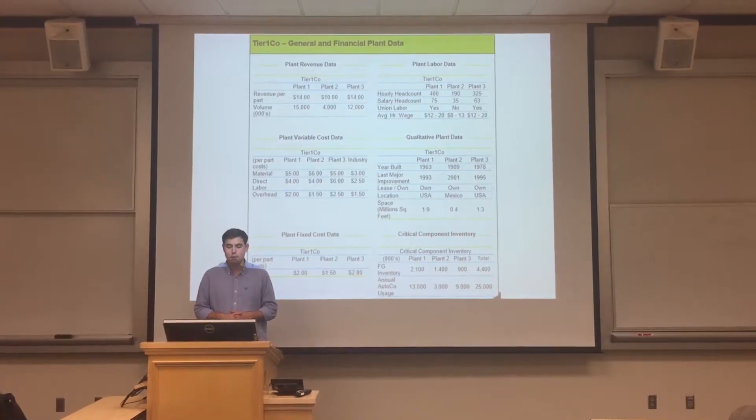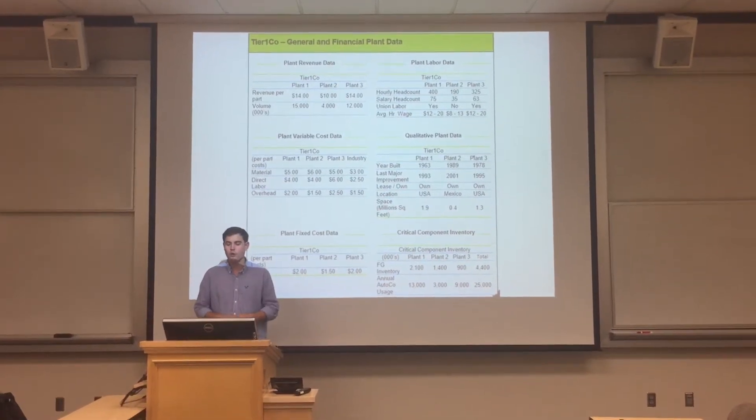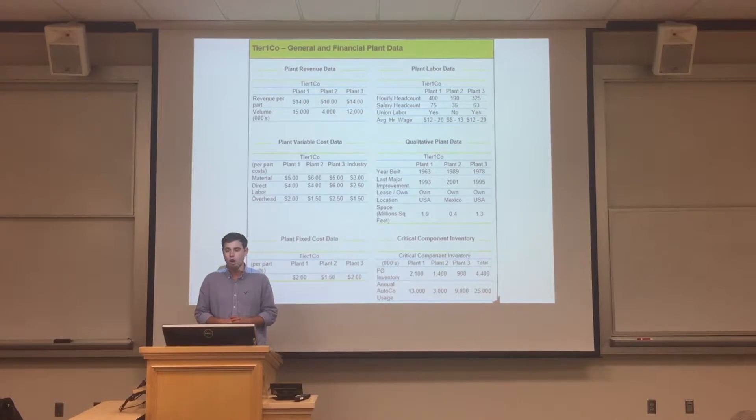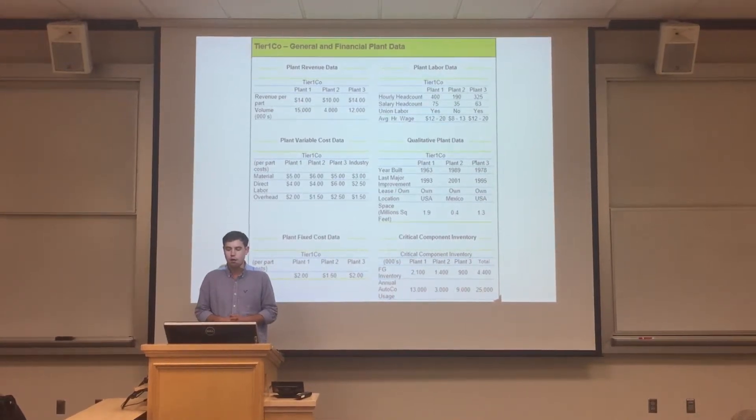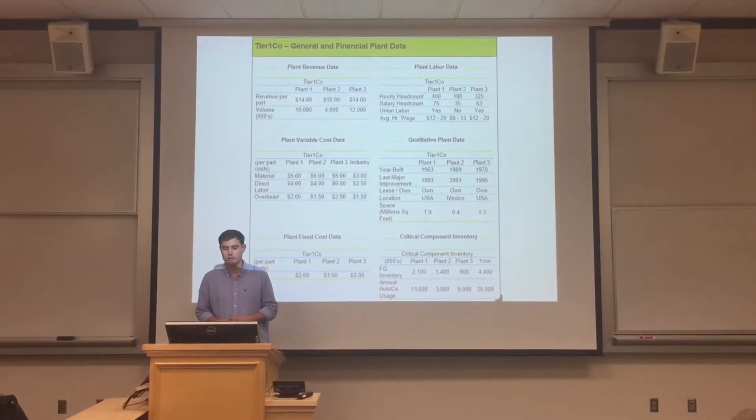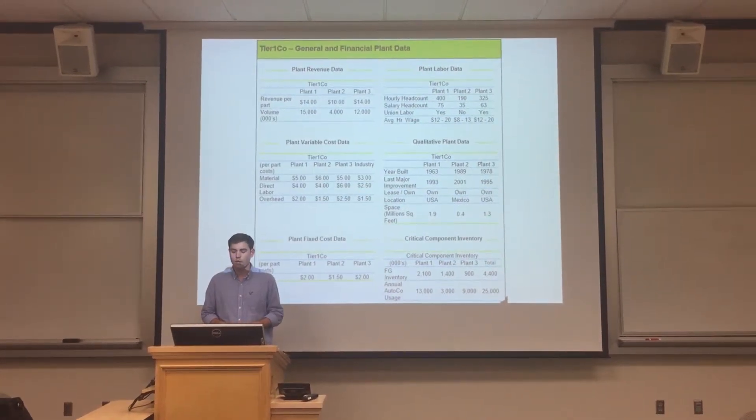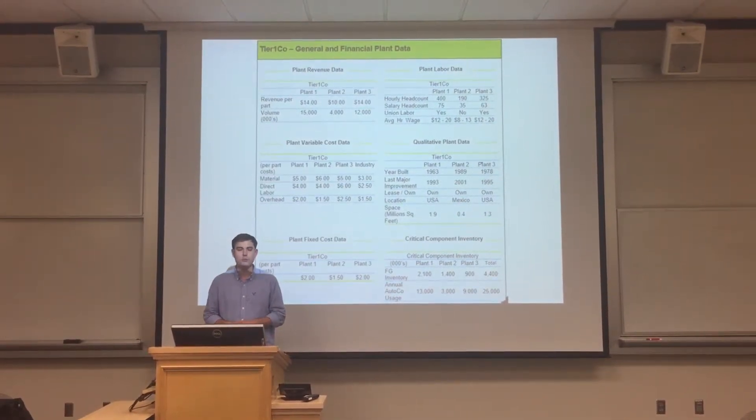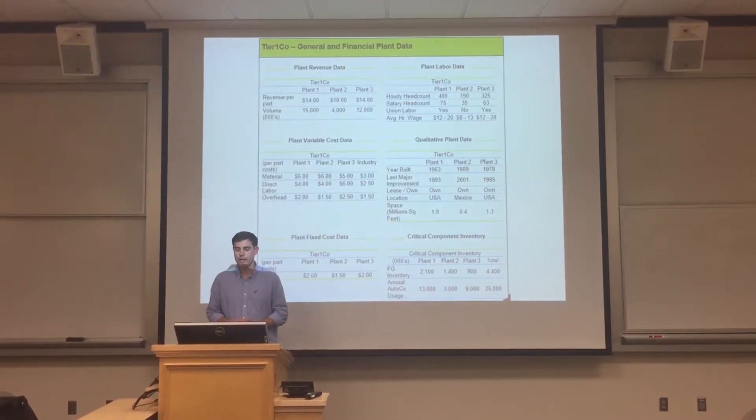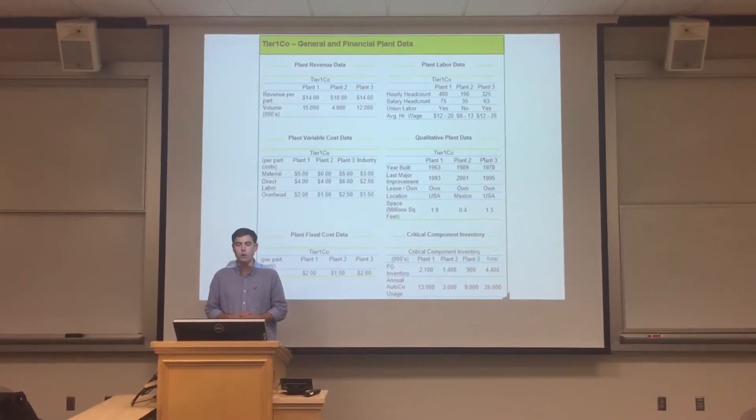It might be helpful to have some key background. For example, the company Tier 1 Co is an auto parts supplier for the company Auto Co. Again, here's the question if you forgot. Given each plant's current level of profitability, what are the options and implications for each plant regarding whether to retain and improve operations or sell the plant?